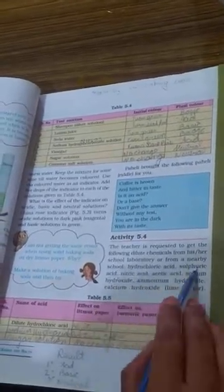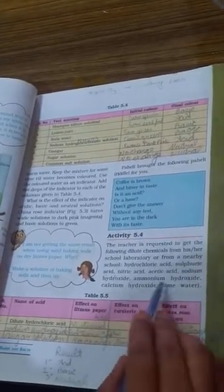Activity 5.4. The teacher is requested to get the following dilute chemicals from his or her school laboratory or from a nearby school. Hydrochloric acid. Sulfuric acid. Nitric acid. Acetic acid. Sodium hydroxide. Ammonium hydroxide. Calcium hydroxide. Lime water. That is. Sorry children. I cannot get it. Because I am not getting it in market. I don't have it at home. So this experiment. Whenever school reopens. We can try it out.